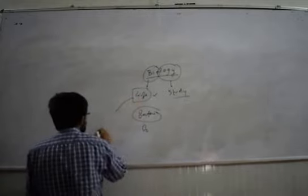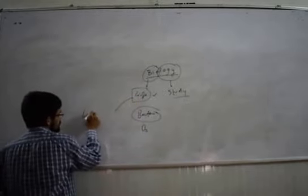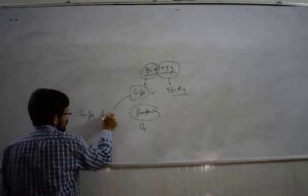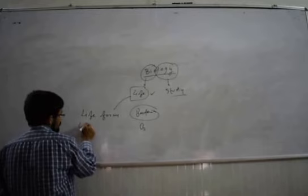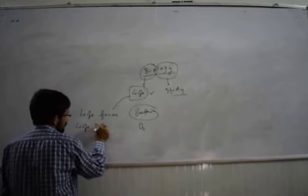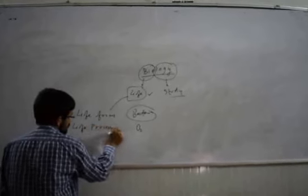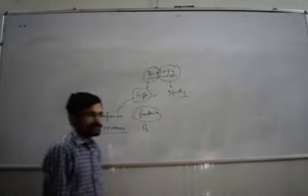Instead we can use two important words. The first one is life forms and the next one will be life processes. So this is one part.